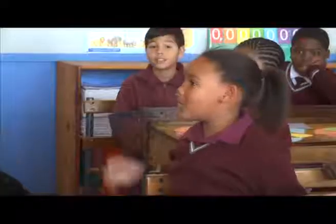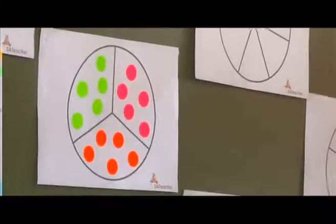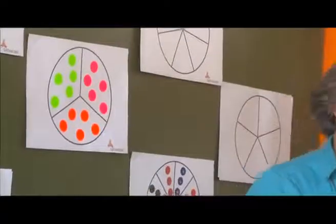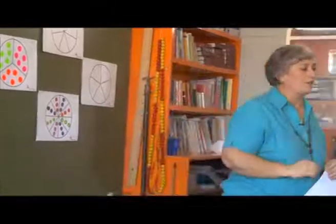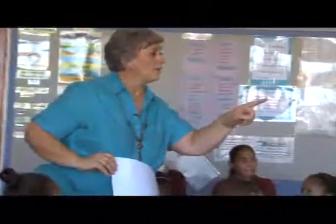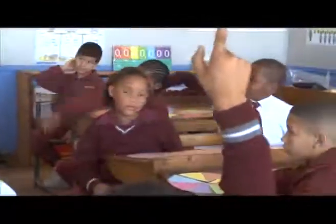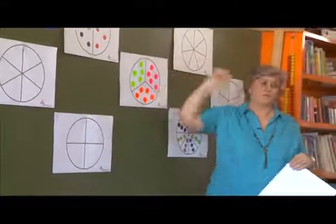What do we call one part? One part is called a third. For instance, in the thirds we worked with five and there were five dots in each third, which then represents a third representing five. So two thirds will then represent ten and three thirds will represent fifteen. Two thirds of fifteen equals ten. One part of the third is five. Okay, all together we then discovered that fifteen makes one whole again.